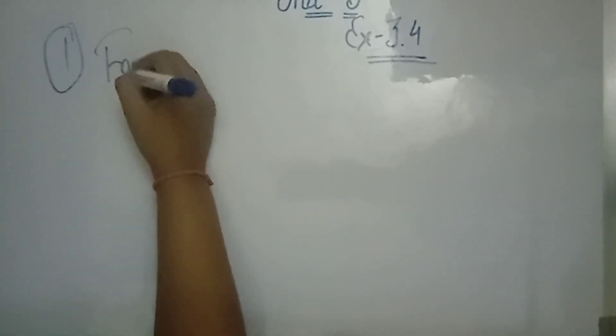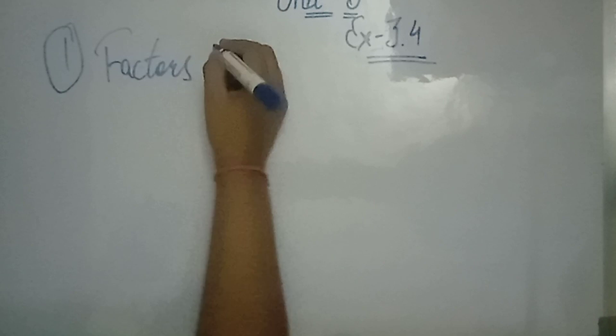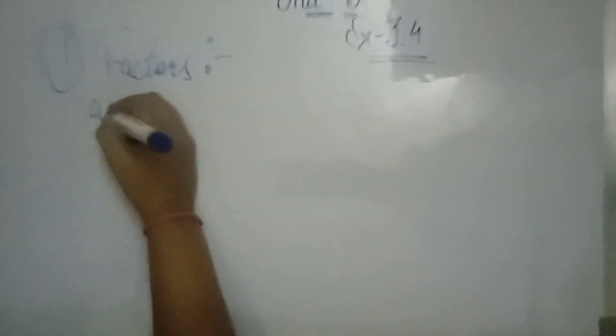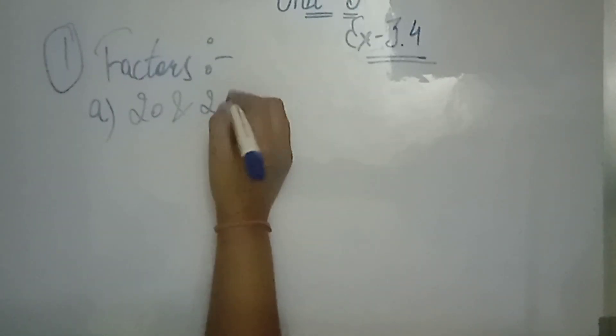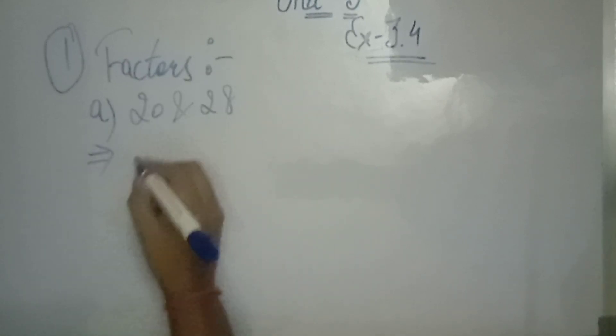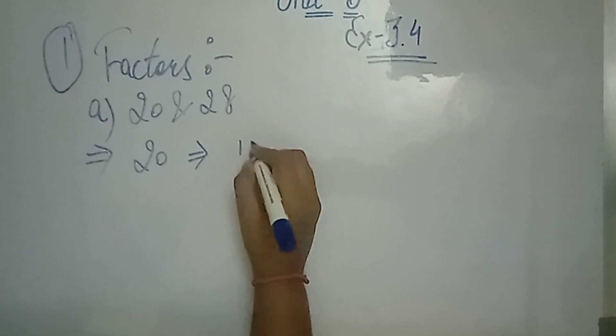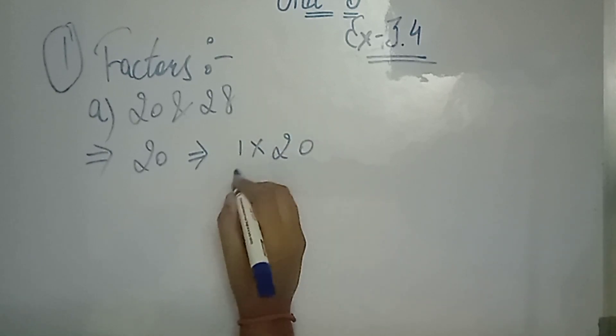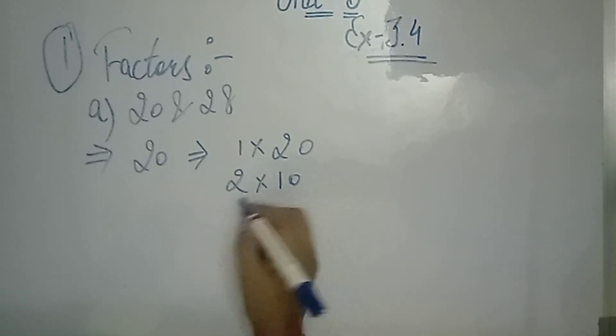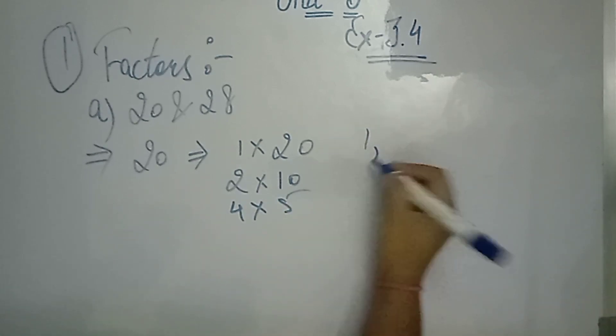We have to learn how to remove factors, like 20 and 28. We have to remove factors. So what are the factors of 20? 1 multiplied by 20, 2 multiplied by 10, 4 and 5. Now it is not happening.